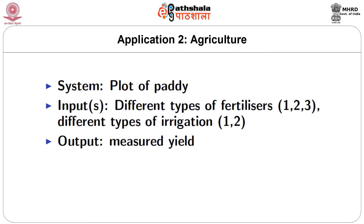The next application also comes from agriculture, continuing the last example but adding one more factor. We again have a plot of paddy, but now there are two inputs: different types of fertilizers as before, and also different types of irrigation — say manual irrigation and irrigation using a pump. Fertilizers have three levels (1, 2, 3) and irrigation has two levels (1, 2). Once again, do not confuse the number of levels with the number of inputs.